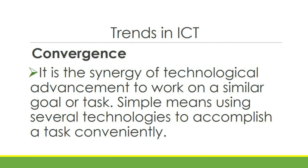Trends in ICT — these are the things that ICT is currently most used for. Technological convergence: it is the synergy of technological advancements to work on a similar goal or task — the use of different technologies to accomplish a task. For example, if you're assigned to write an essay, you need a device to type on, like a laptop or phone; a text editor or word processor like Microsoft Word or WPS Writer; a web browser to search for references; and internet access. So just writing an essay uses four technologies.